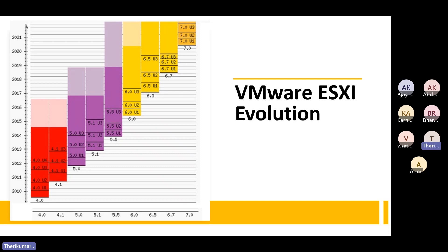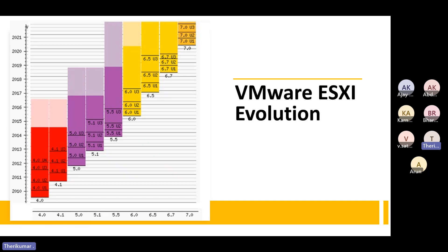Currently, most companies are using VMware vSphere version 7.0. Many companies are on 6.7 or 7.0. VMware is not supporting version 6.5 and 6.7 anymore. VMware supports only 7.0 and 8.0. If you want support for 6.5, you need to move to 7.0.